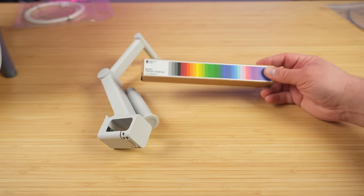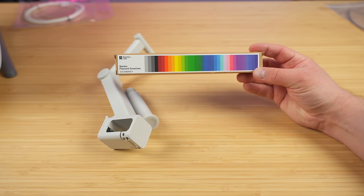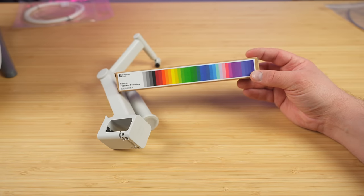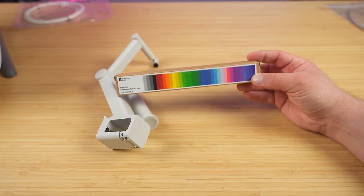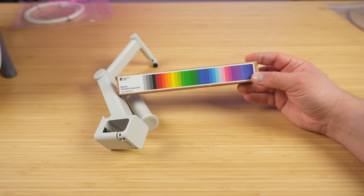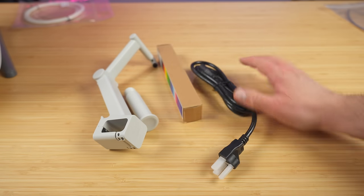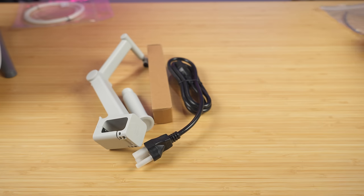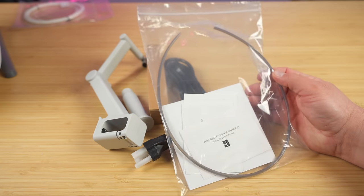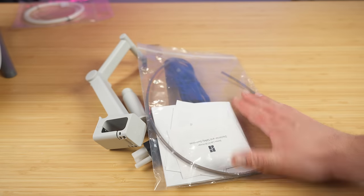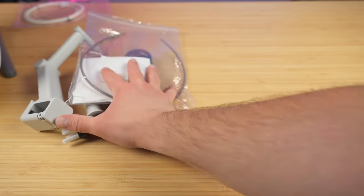It comes with your filament swatches. This shows you the different types of filaments and the colors they offer. This gives you a really good idea of what colors look like when you're going to order the Bamboo Lab filament. A power cord, of course. It comes with an extra PTFE tube here. This one will be used if you're going to do a single spool.